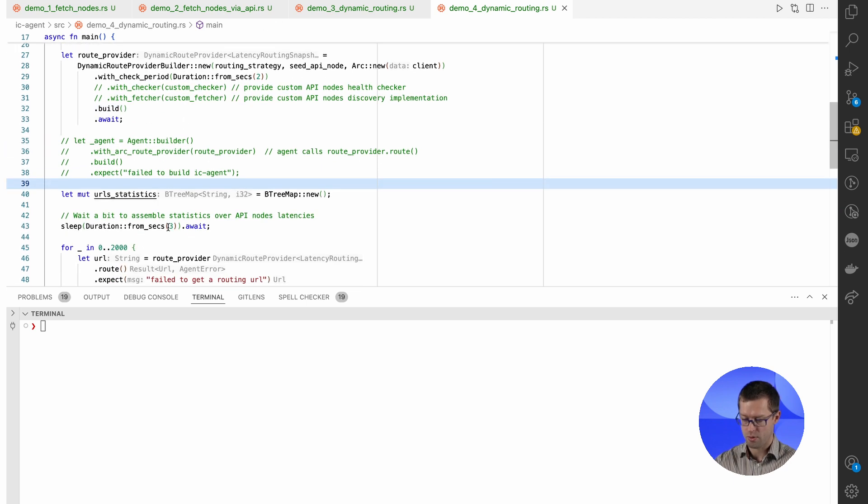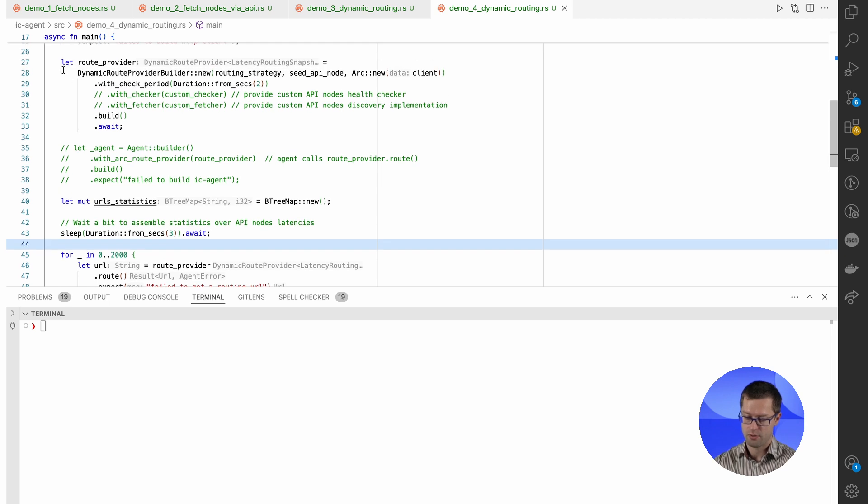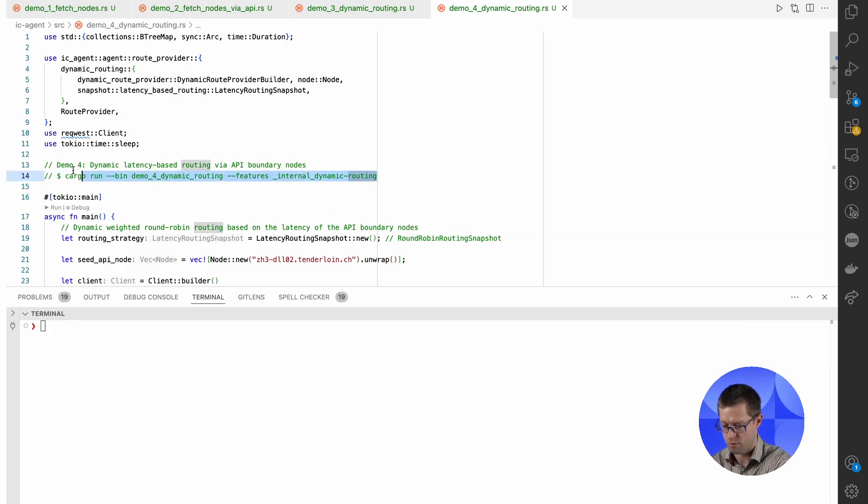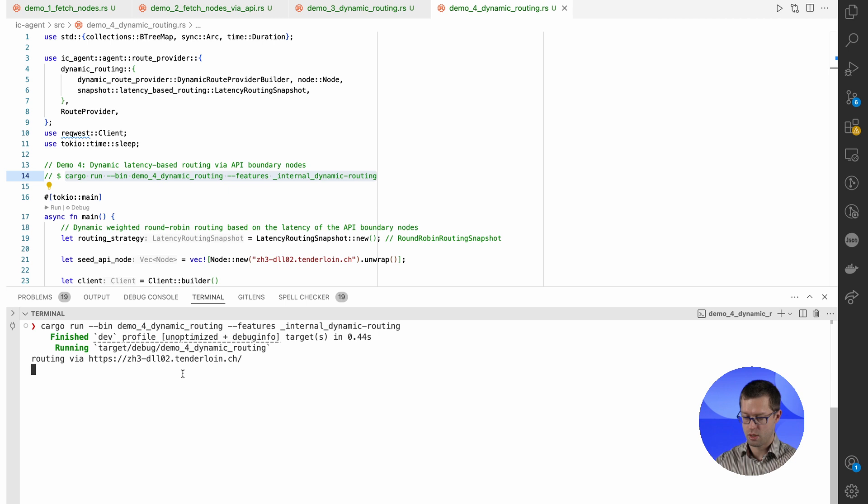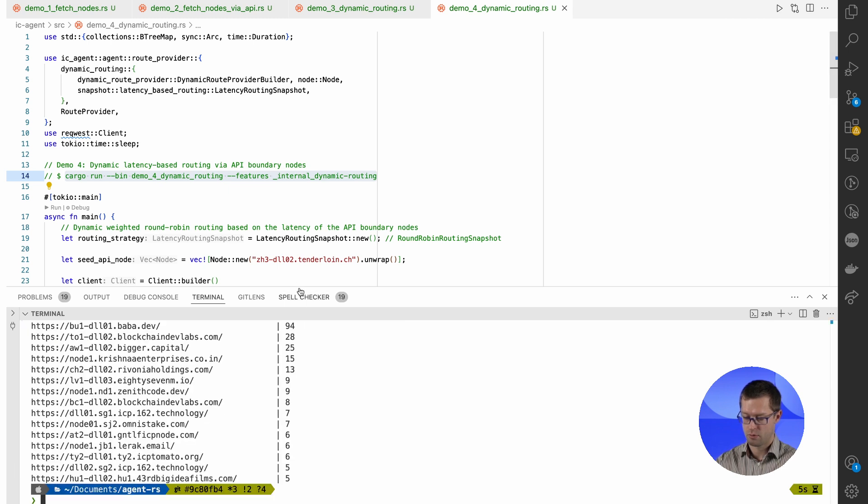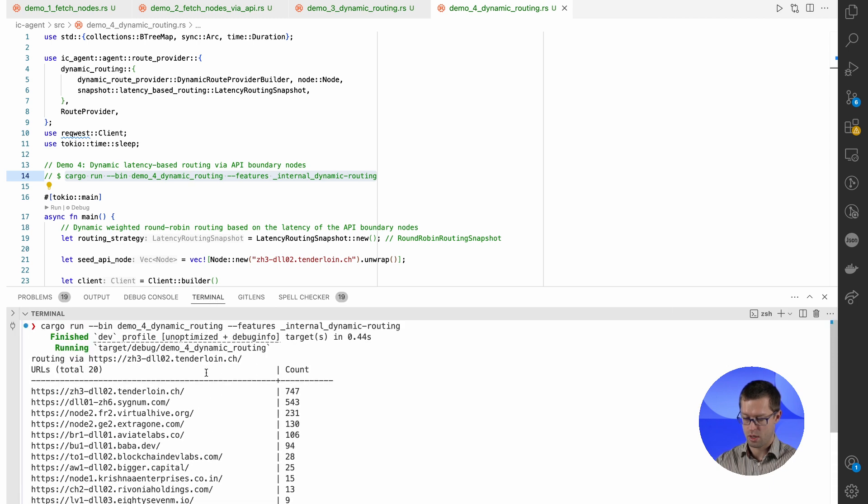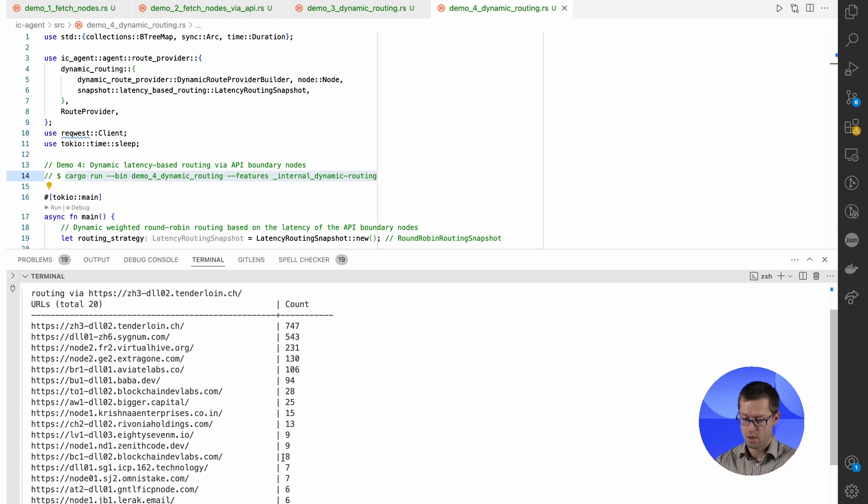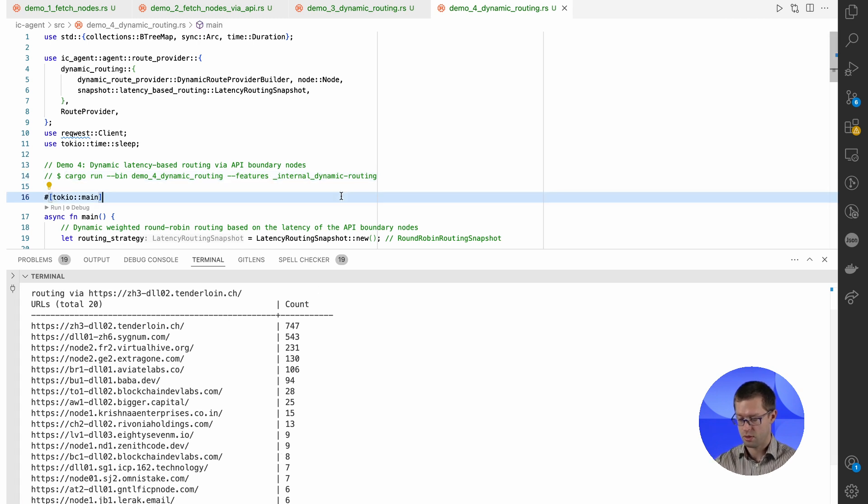For the sake of this demo, I will generate 2000 URLs just from this route provider service, and we will look at some statistics. As you can see, all 20 API boundary nodes were used in the routing, but they vary strongly in statistics. For example, the node which is closer to me was used much more frequently than some other nodes.